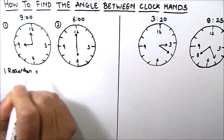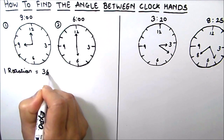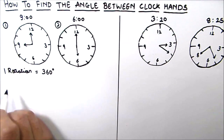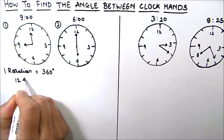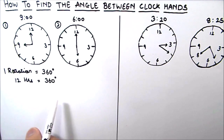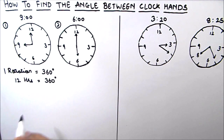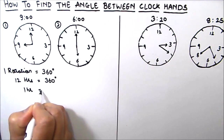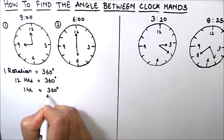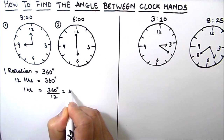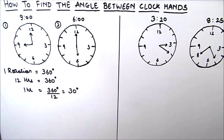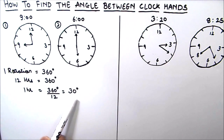A whole circle is equal to 360 degrees, and one rotation means 12 hours. So in 12 hours, the hands cover a total angle of 360 degrees. For one hour, the degree covered will be 360 divided by 12, which is equal to 30 degrees. So in one hour, the angle covered by the hour hand of the clock is 30 degrees.